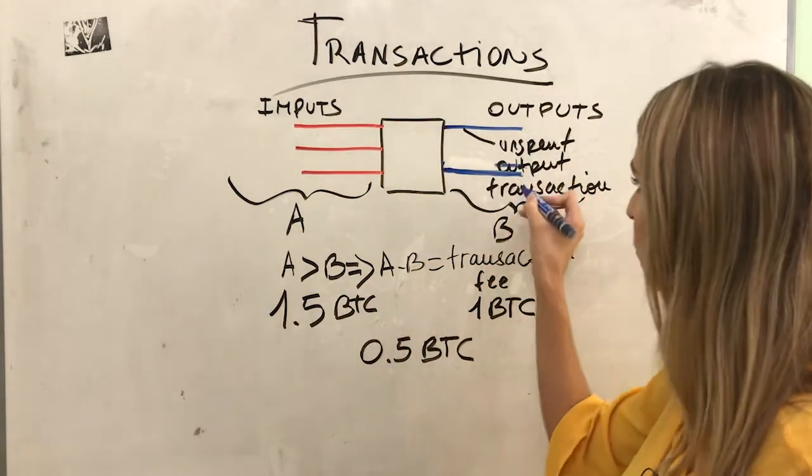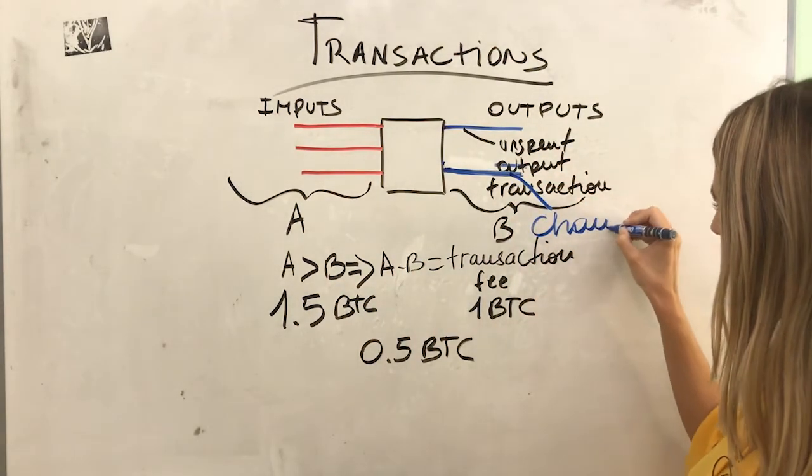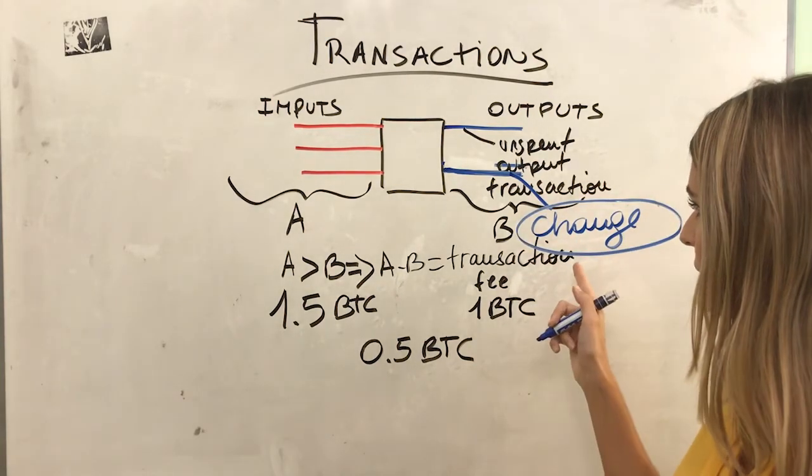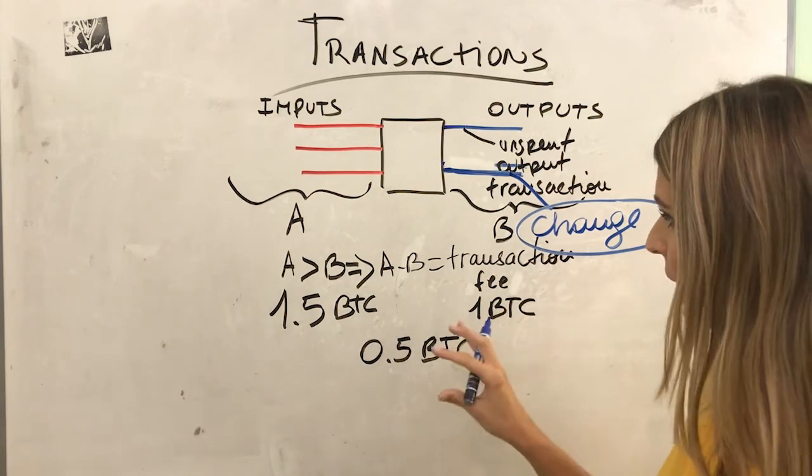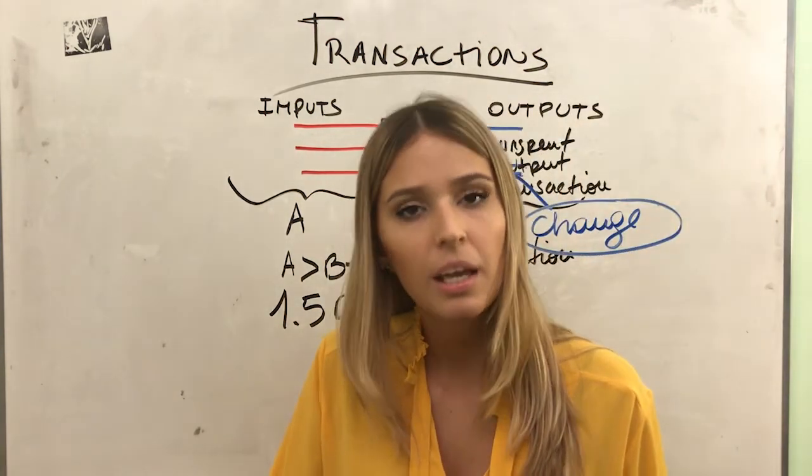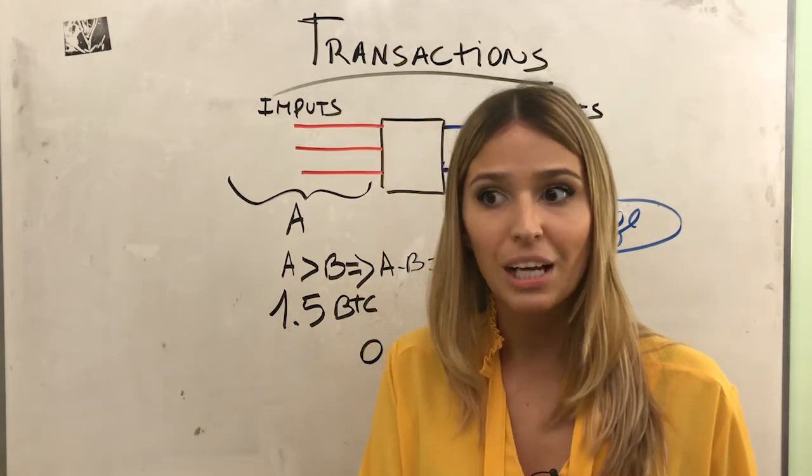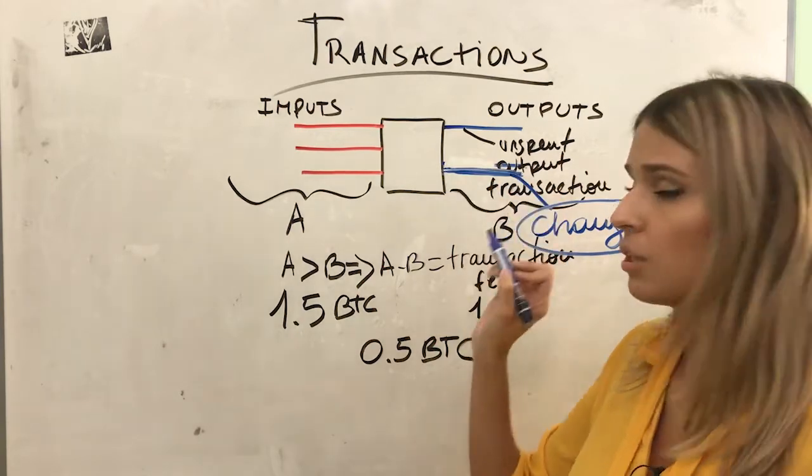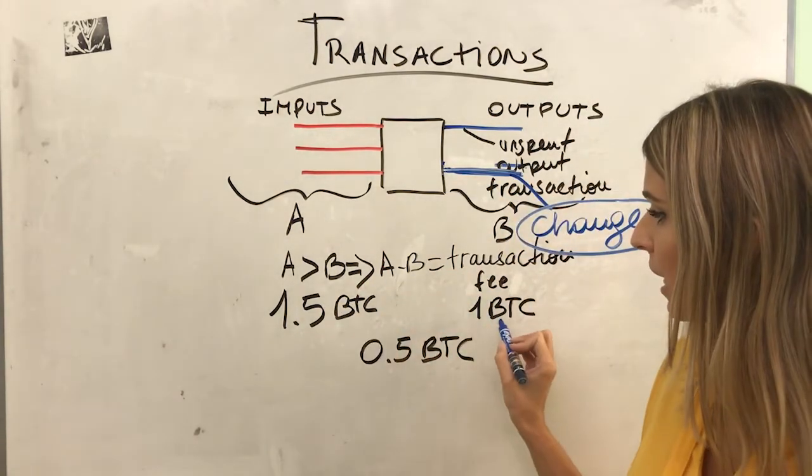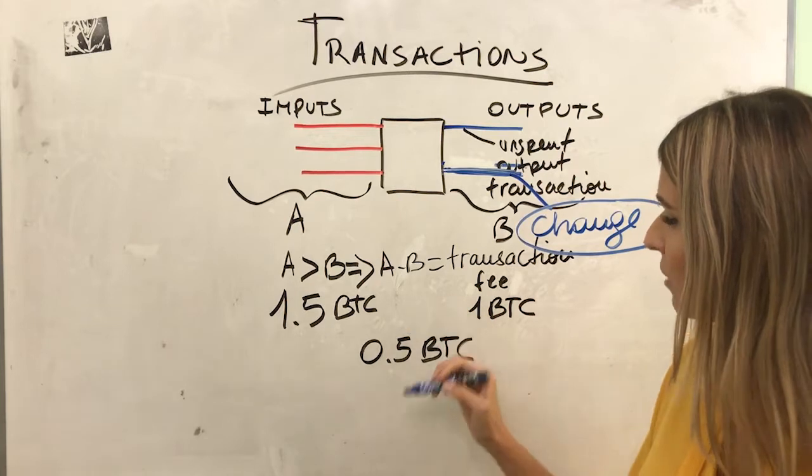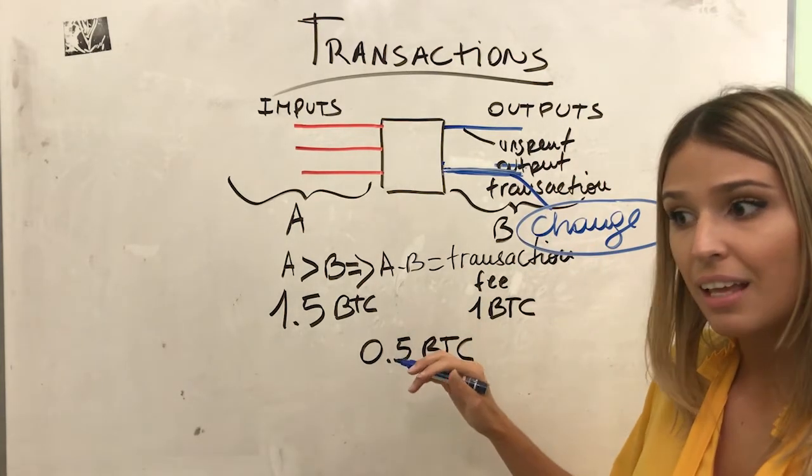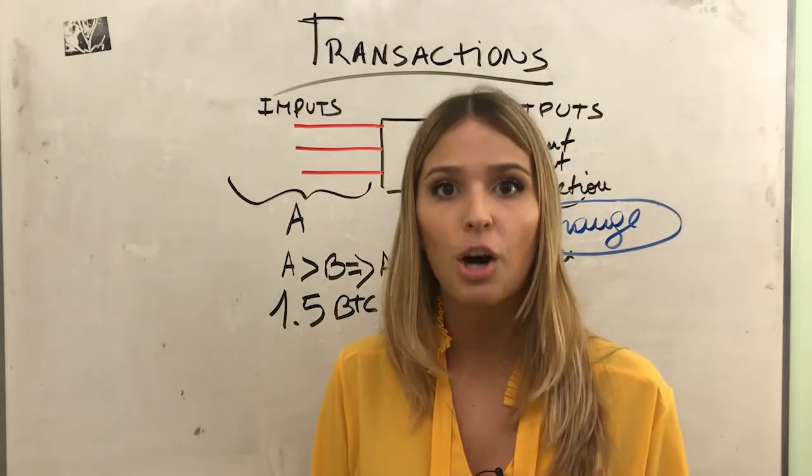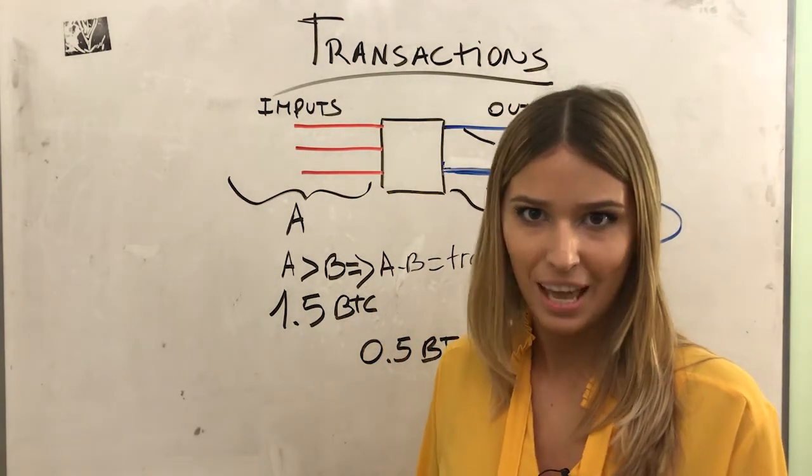And this output is called - I don't know if you can see it - change. This output is called the change. And it is exactly based on that. All the inputs have to be spent in one transaction, and in one transaction I can have many outputs. And the difference, when the difference is way too high, the remainder I can send back to myself, and what is left is going to be the transaction fee. I hope you got what I just said.